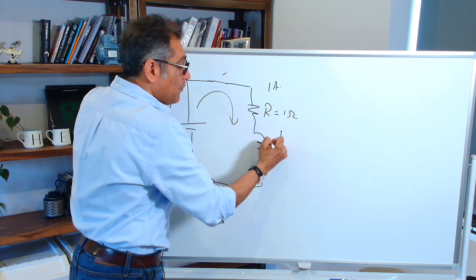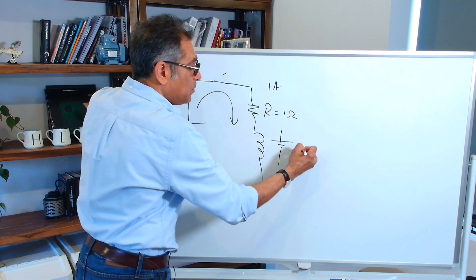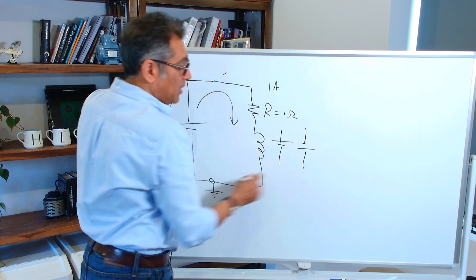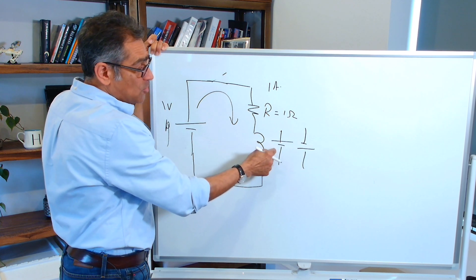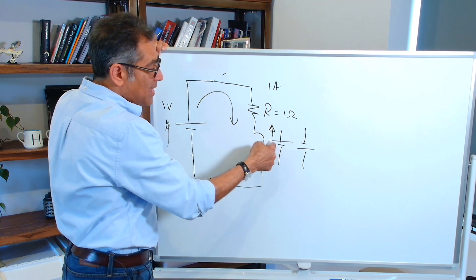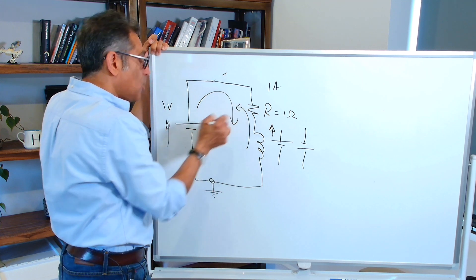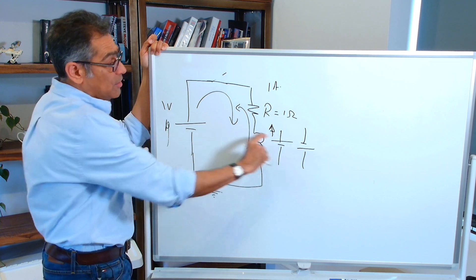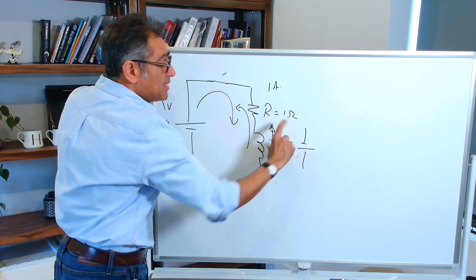Now will it be this way or will it be this way? Well, it's going to have to be this way because the current that is coming out of here is going to have to oppose this voltage. So the direction of it will be this way.